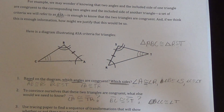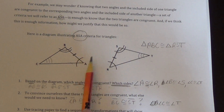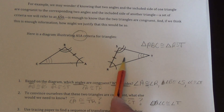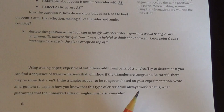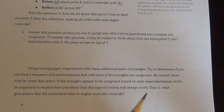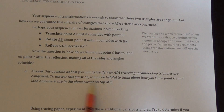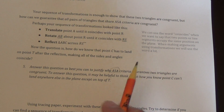We would call this ASA. If we know two angles and the side in between those two angles, then we can guarantee that our two triangles are congruent. That's our first way of determining if two triangles are congruent. The sequence of transformations is enough to show that two triangles are congruent — we just need to understand that if we have two angles and the side in between, that guarantees that our triangles are congruent.